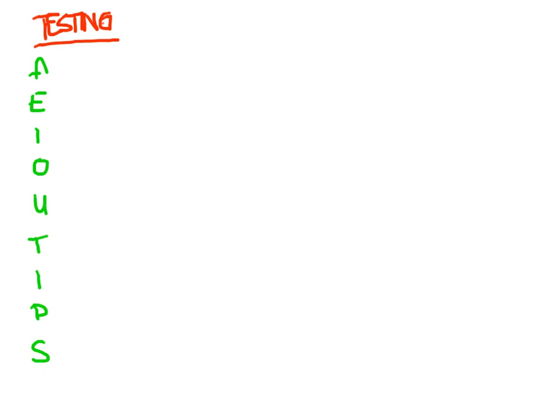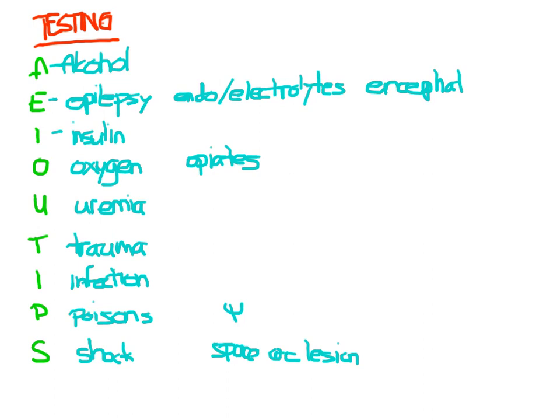Now on to testing. Our strategy is not to shotgun it and order everything, but to use our differential diagnosis — AEIOU TIPS — to guide us. For alcohol, maybe send an alcohol level, and a serum osmolality if you suspect a toxic alcohol. For epilepsy, if they're seizing subclinically, give a trial of a benzodiazepine, call neurology and get an EEG, and send drug levels of all their anticonvulsants.